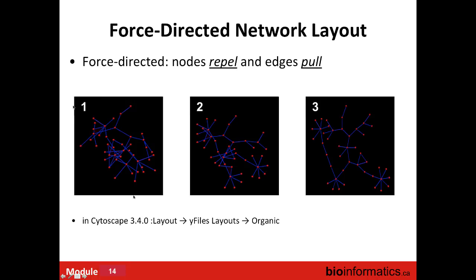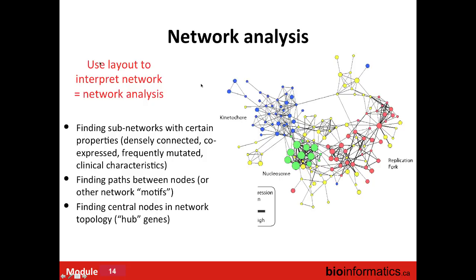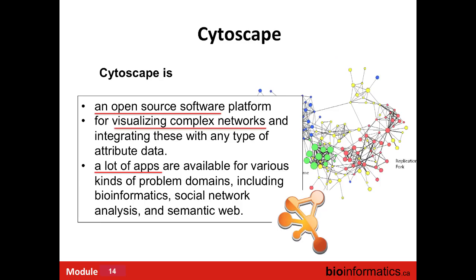The three snapshots of the force-directed layout show that at the beginning nodes are overlapping, then progressively repel each other as the algorithm runs, until the network is fully stretched out and ready for analysis. Network analysis includes finding sub-networks such as clusters or modules, finding the shortest path between two nodes, and identifying central hub genes.